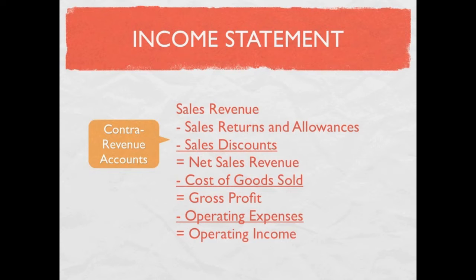We start out with sales revenue — it's different from a service company which has service revenue because now we're selling a product. We also have two contra revenue accounts called sales returns and allowances and sales discounts. Those effectively reduce our sales revenue to give us net sales revenue. From net sales revenue we subtract cost of goods sold to get gross profit, and from gross profit we subtract operating expenses to get operating income.